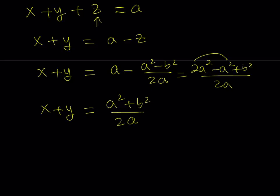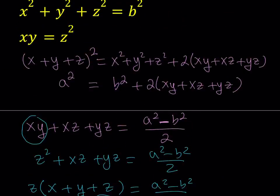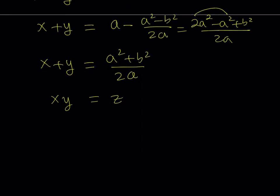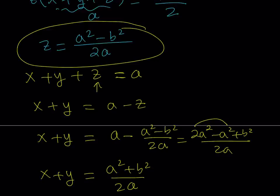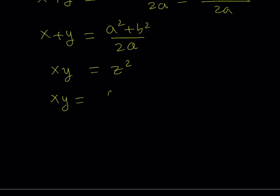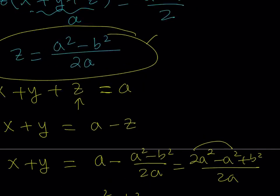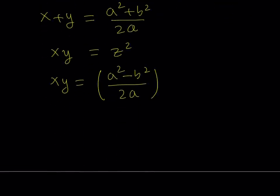Now I haven't found X and Y yet but I'm getting closer because I have X+Y. I also have X times Y — it's given in the original problem that XY = Z², and we know Z in terms of A and B. So XY = Z² = ((A²−B²)/(2A))². So now I have both X+Y and X·Y. Remember this is just Z squared.